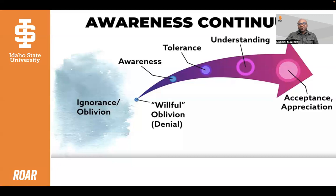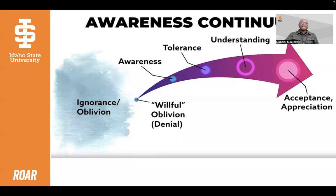Understanding gets us closer to the deep culture — the underbelly of the iceberg below the waterline. The last stage on the continuum is acceptance and appreciation. In order to get to a point of acceptance and appreciation of difference, we have to do more than simply understand the person, place, or thing as a difference. We have to accept and appreciate the value this difference brings to our community or organization. That's when you can truly start applying the principles of diversity, equity, inclusion, and access — because you first acknowledge the difference, seek to understand it, and then accept and appreciate the value it can add.